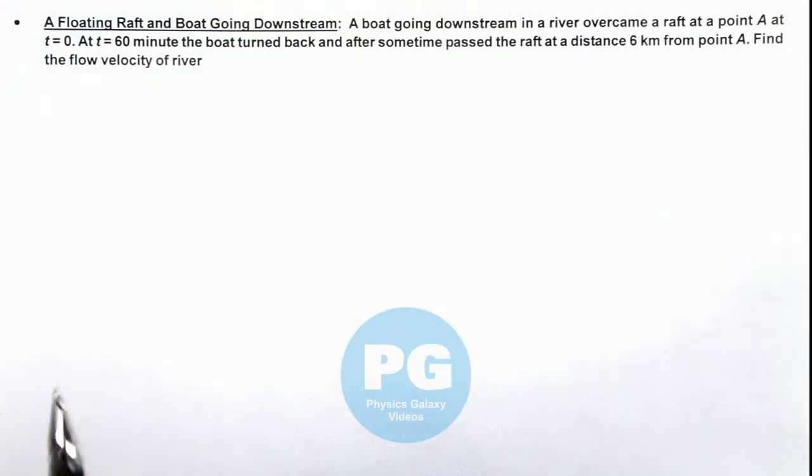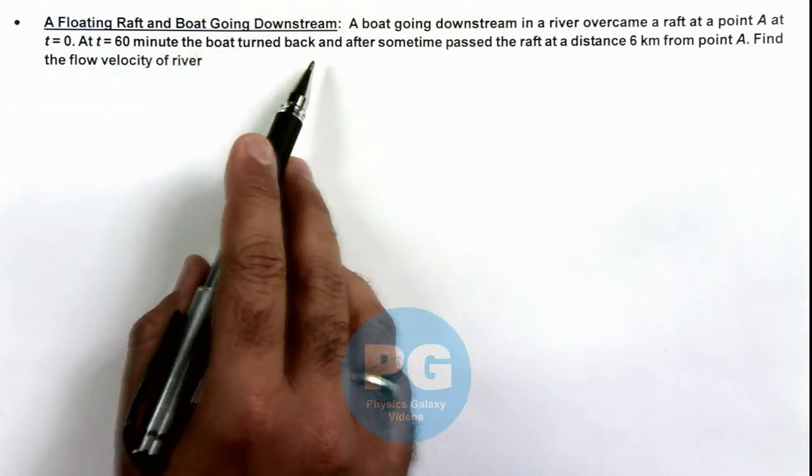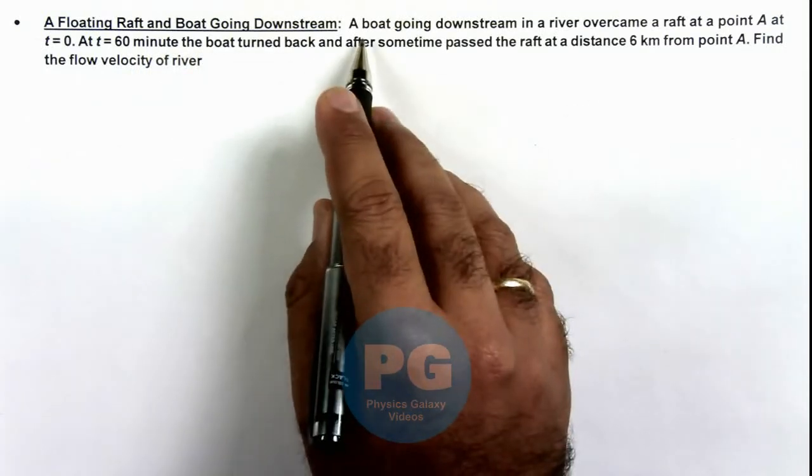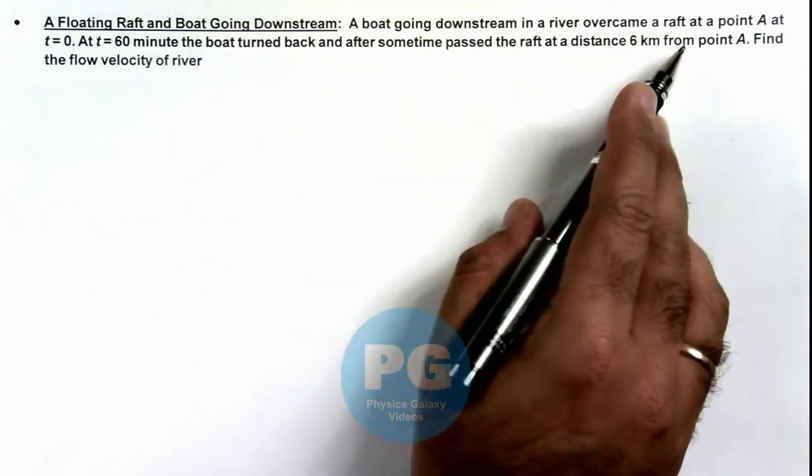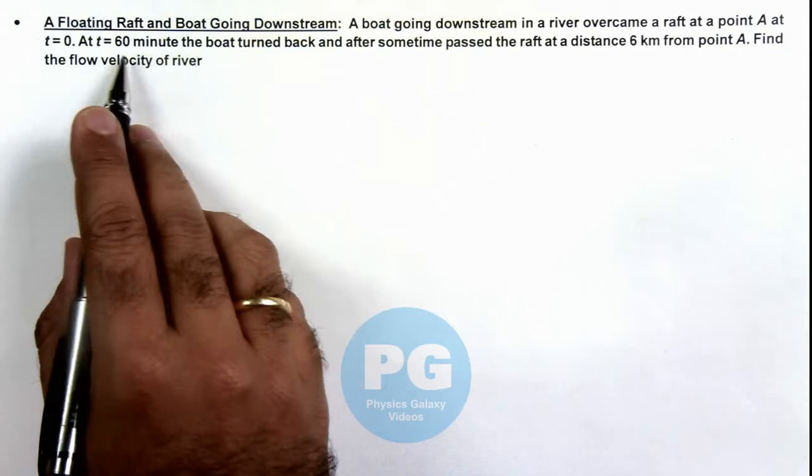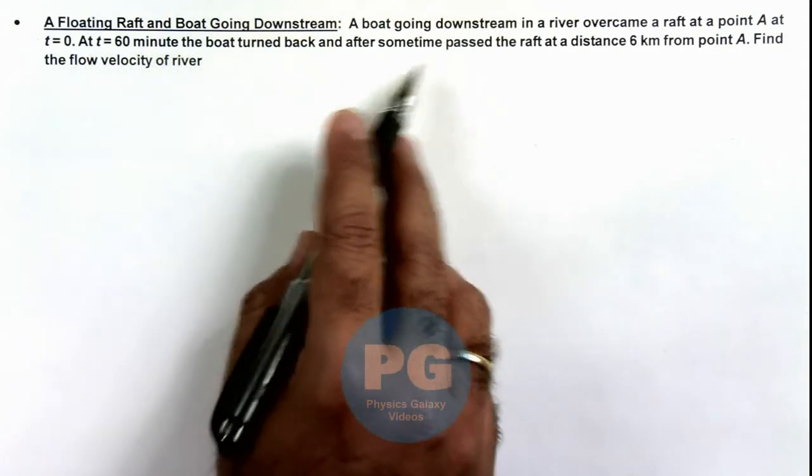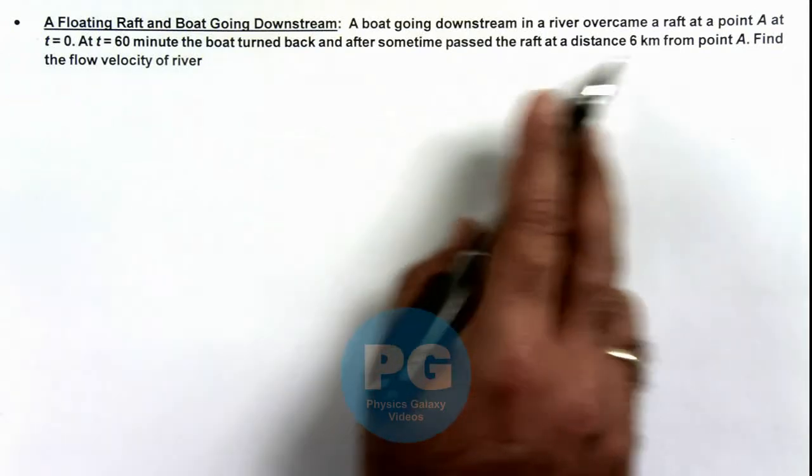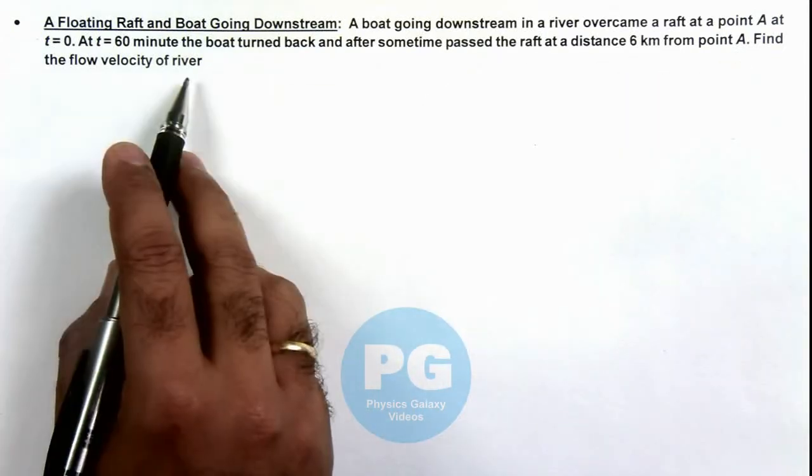In this illustration, we'll discuss a floating raft and a boat going downstream. The situation is stated as follows: A boat going downstream in a river overcame a raft at point A at t equals zero. At t equals 60 minutes, that is after one hour, the boat turned back and after some time passed the raft at a distance 6 kilometers from point A. We are required to find the flow velocity of the river.